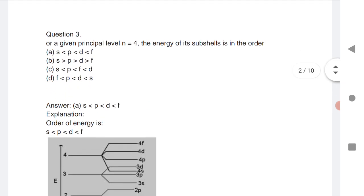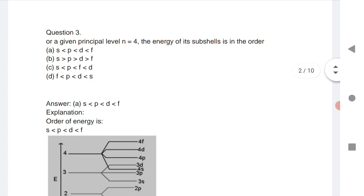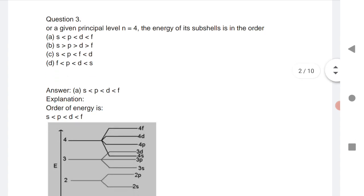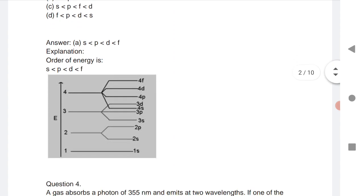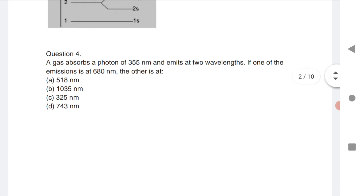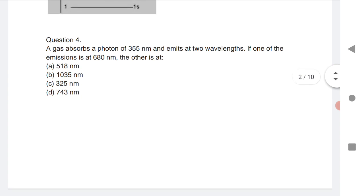Next question: for a given principal level n=4, the energy order of its sub-levels is s < p < d < f. This is a straightforward question about sub-level energy ordering.